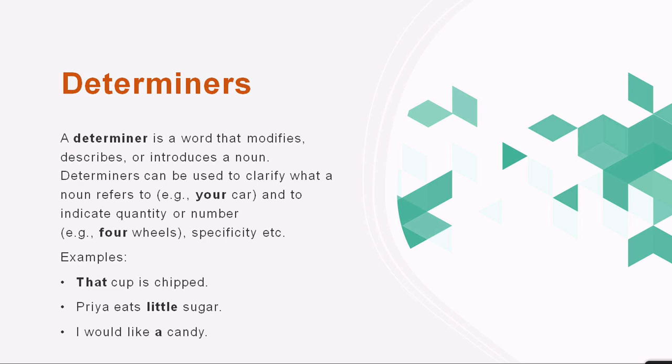Let's look at some more examples: 'That cup is chipped.' 'Priya eats little sugar.' 'I would like a candy.' In all these sentences, the highlighted words — 'that,' 'little,' and 'a' — are telling us more about our nouns, describing a noun, or introducing a noun. Now, do determiners always come before a noun? Yes, you will always see them before a noun, because they are supposed to tell more about it.